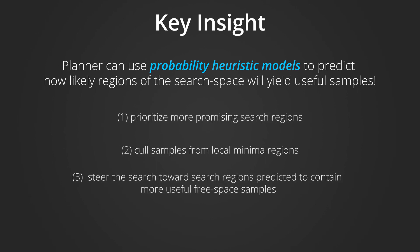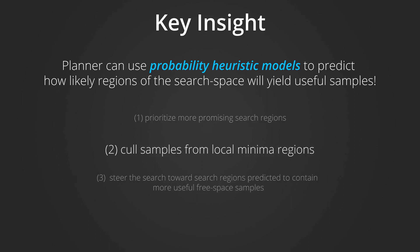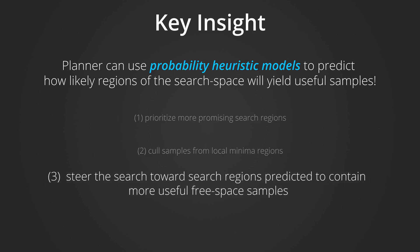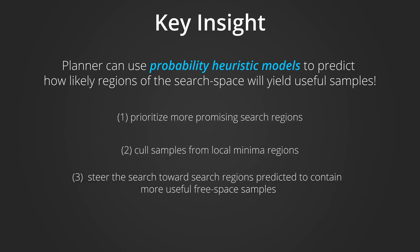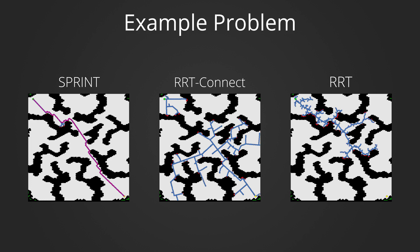Our key insight is that a planner can incrementally build and update probability heuristic models throughout the search that predict how likely regions of the search space will yield useful samples. These probability heuristics can be used to prioritize more promising search regions to foster a greedy-first global search strategy while still exploring broadly in the limit, cull samples from local minima regions to avoid wasteful unfruitful samples, and steer the search toward regions predicted to contain more useful free space samples. Using these probability heuristics, SPRINT yields a higher percentage of useful samples and more quickly finds a solution path with far fewer collision check queries.